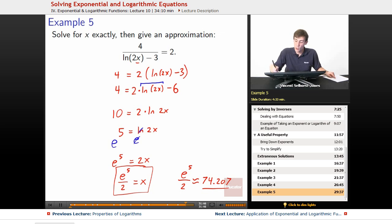e to the 5th over 2 winds up being approximately 74.207. Great. Now, if we want to do a quick check, we can do a numerical approximation where we try plugging it in using a calculator. So we'd have 4 over the natural log of 2 times, replace our x, which we know is approximately 74.207 minus 3. You work that through with the calculator, and you wind up getting approximately 1.99999,